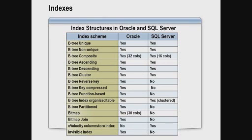Let's now look at the index structures available in Oracle and SQL Server. Both support unique and non-unique indexes, and composite indexes, although the number of columns allowed in an index key is smaller in SQL Server — limited to 16 columns or 900 bytes. Index keys can be in ascending or descending order, and both platforms offer clustered indexes.